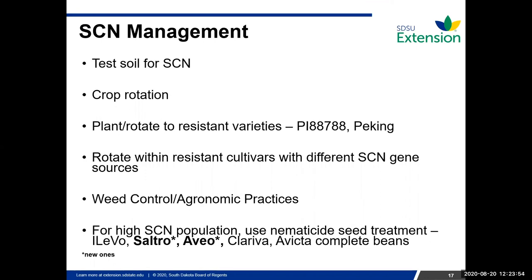Plant resistant varieties if you're not already doing so. There's resistance with the PI 88788 source, among many different ones. You'd want to rotate within your resistance cultivars for different SCN gene sources — don't use the same source year after year, because the SCN can start to overtake that resistance and you'll start to see your numbers going up.